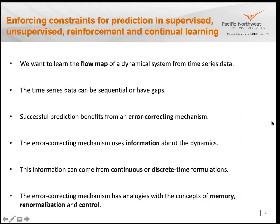Let's start with what we want to do. We suppose we're given a dynamical system and time series data, and what we want to learn is a flow map of the dynamical system — a map that takes the state of the system at one time as input and outputs the state after some time interval delta t. The time series data can be sequential or can have gaps, which is more realistic since sensors may only provide intermittent data.